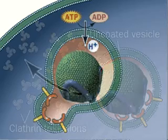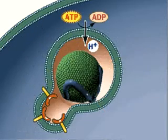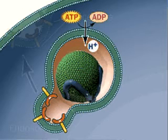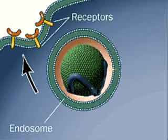Falling pH, driven by proton pumps, causes dissociation of the LDL from its receptors. The receptors concentrate for recycling, leaving the LDL in an endosome.